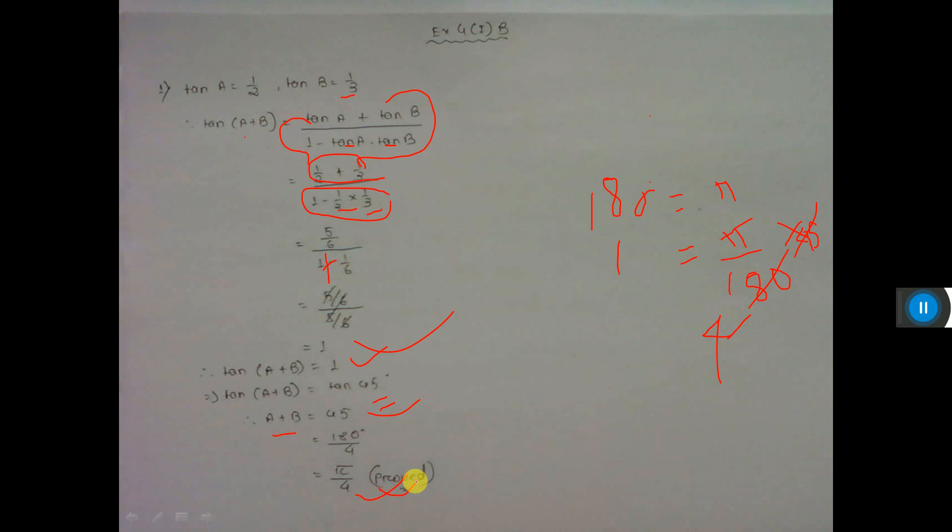So this is the technique to convert from sexagesimal to circular measure. This degree is called sexagesimal measure, and π related is called circular measure. We have to find the value of a plus b, so we have started with tan(a + b) and removing tan we are getting the value. This is the technique of the sum.